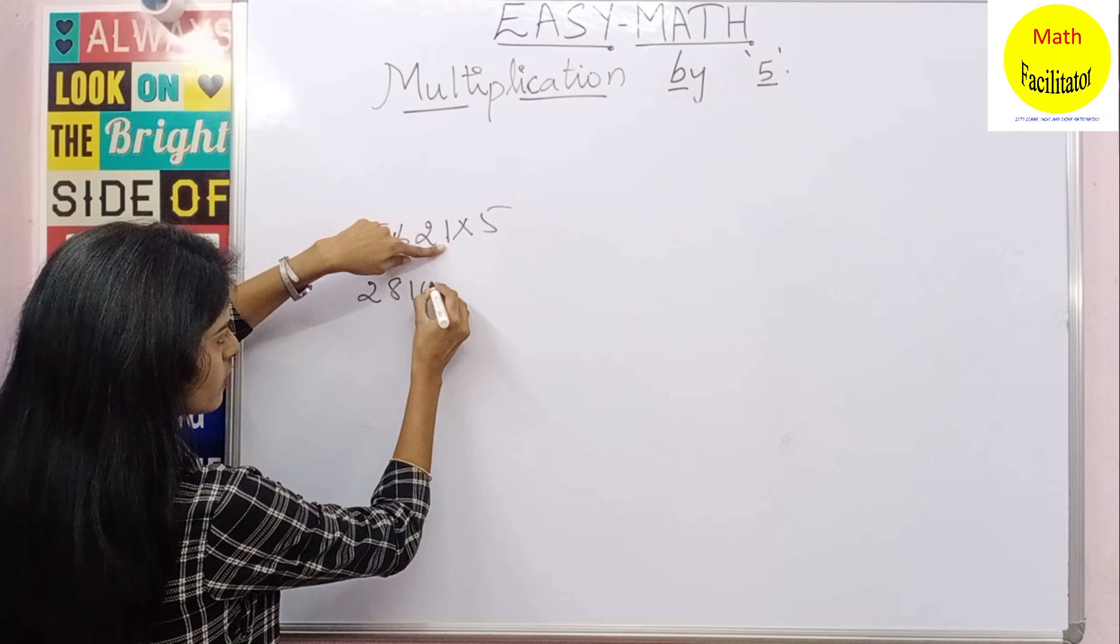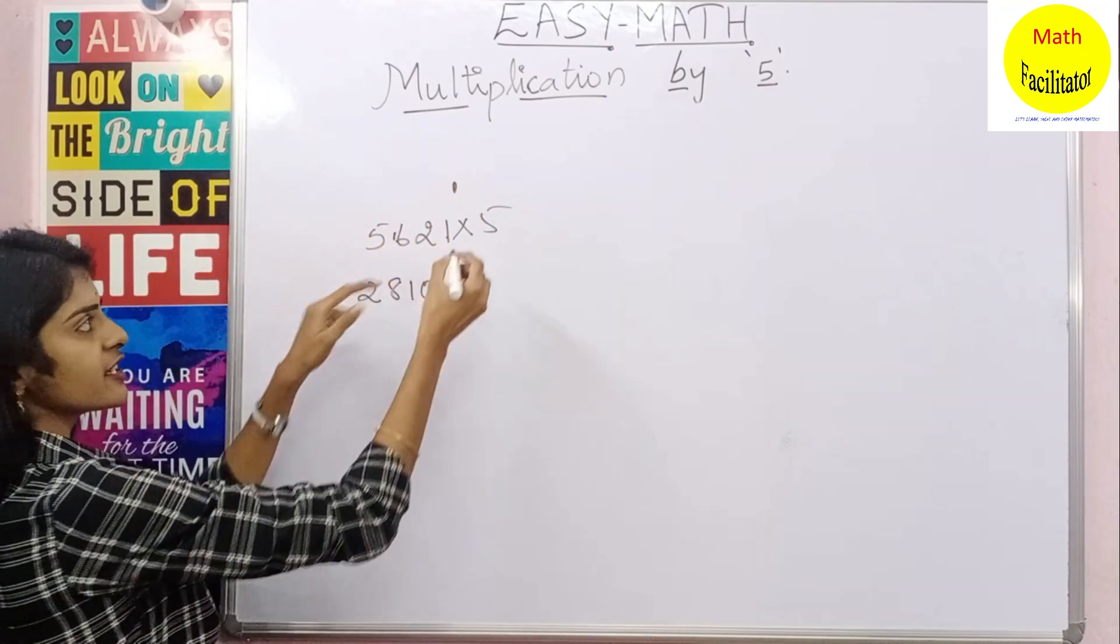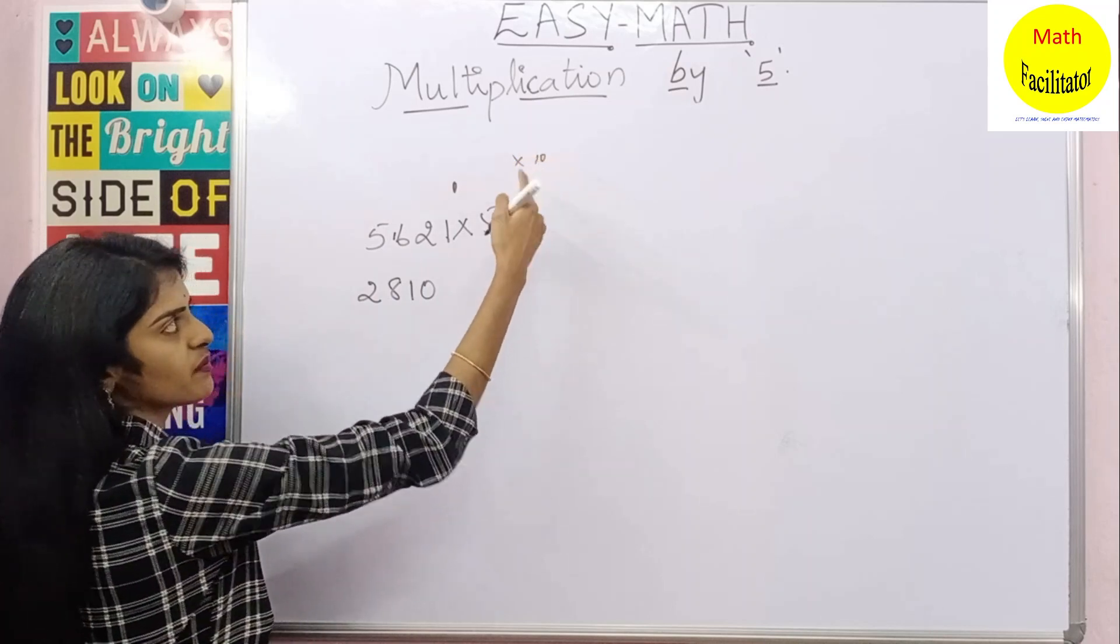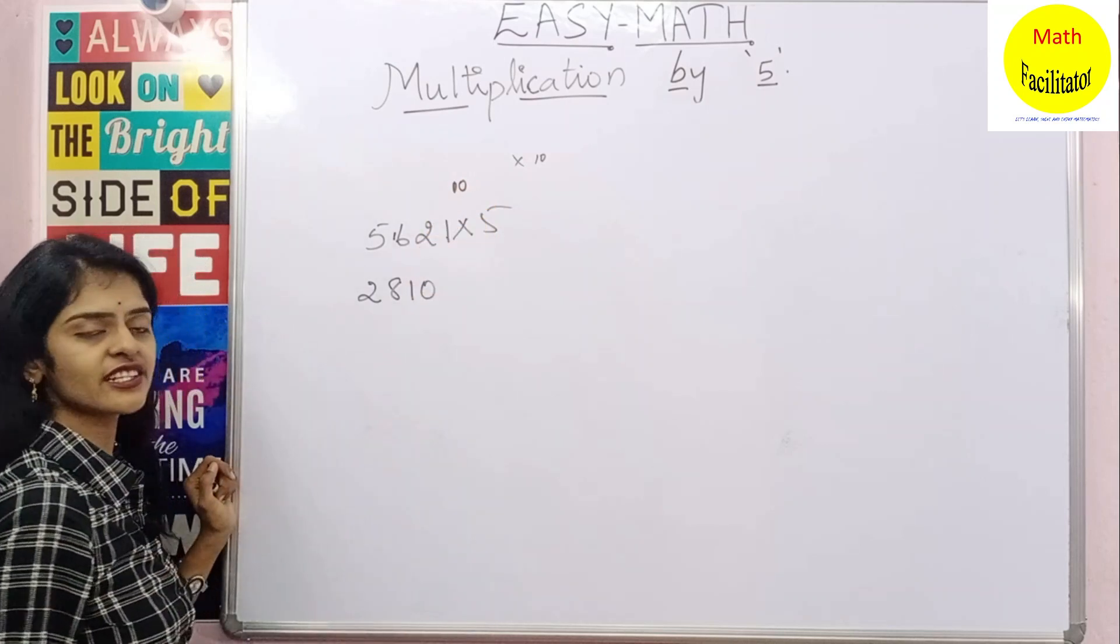And you have 1. 1 is not divisible by 2, so you write 2 times 0 is 0 and 1 is a remainder. But you know that you have a multiplication by 10. This is nothing but 10 by 2. That means after 1 you will have a 0 here. So 2 times 5 is 10. Now this is the answer.